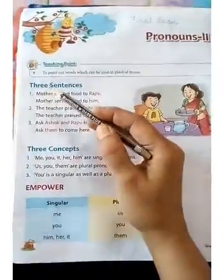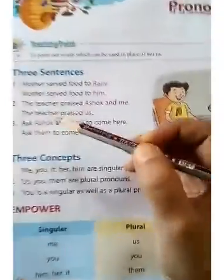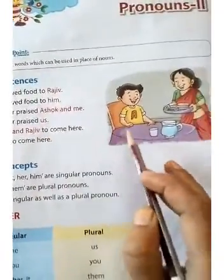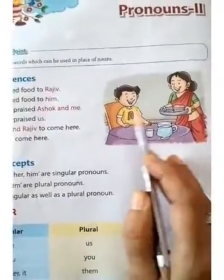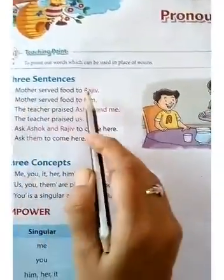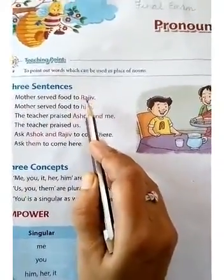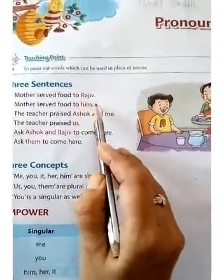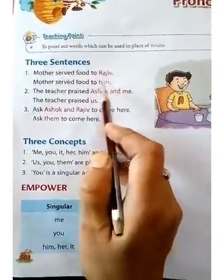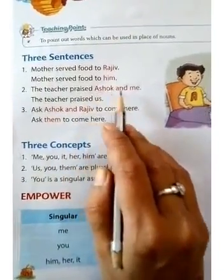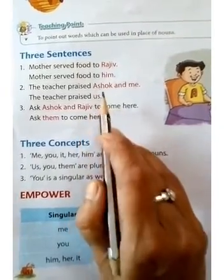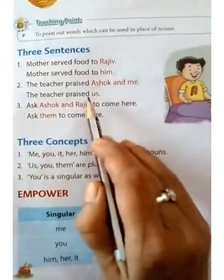Now let's read the three sentences given here. Mother served food to Rajiv. In the picture you can see this boy is Rajiv. His mother is serving food to Rajiv. Now instead of the word Rajiv, we have replaced it with the pronoun him — Mother served food to him. The teacher praised Ashok and me. The teacher praised us. So we have replaced Ashok and me with the pronoun us.